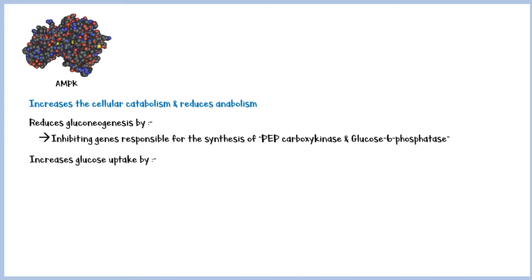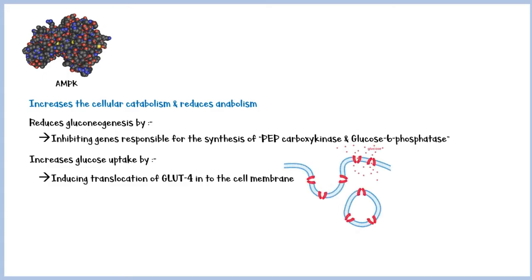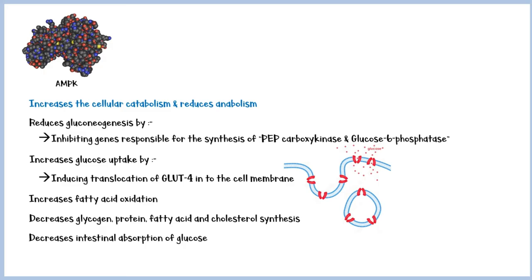It also increases glucose uptake in the peripheral tissues by inducing translocation of GLUT4 into the cell membrane. In addition, AMPK increases fatty acid oxidation, decreases glycogen, protein, fatty acid, and cholesterol synthesis, decreases intestinal absorption of glucose, and reduces LDL cholesterol while increasing HDL cholesterol, which ultimately reduces the risk of cardiovascular events in type 2 diabetics.